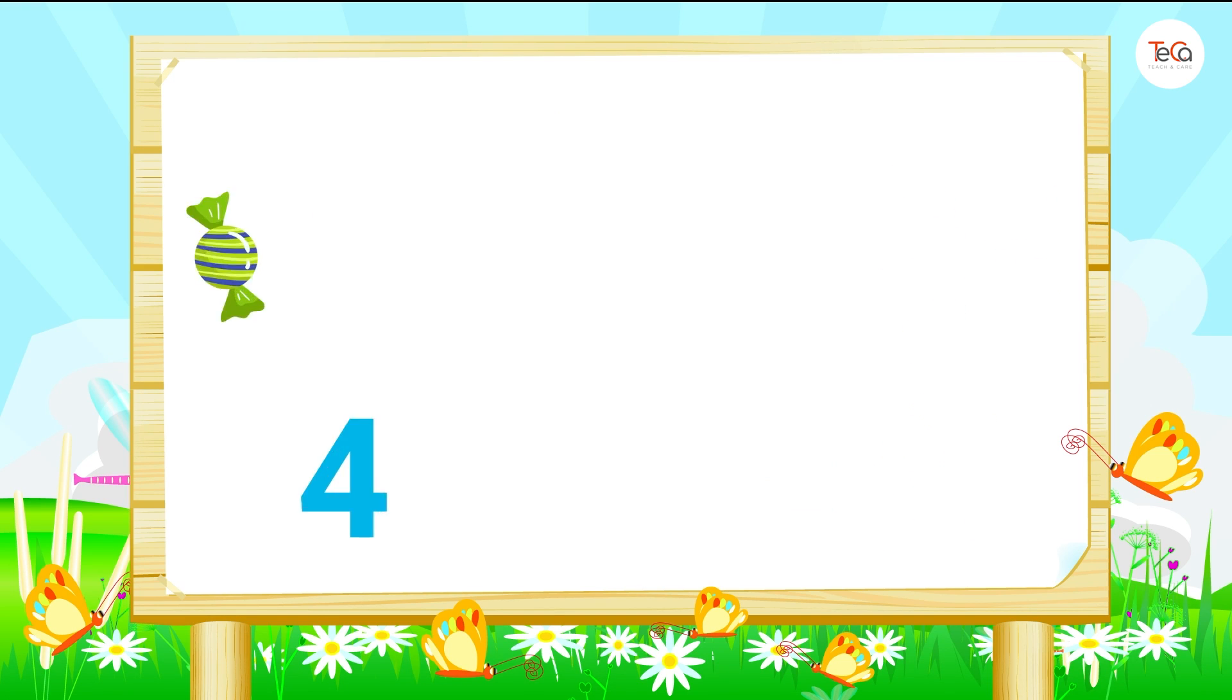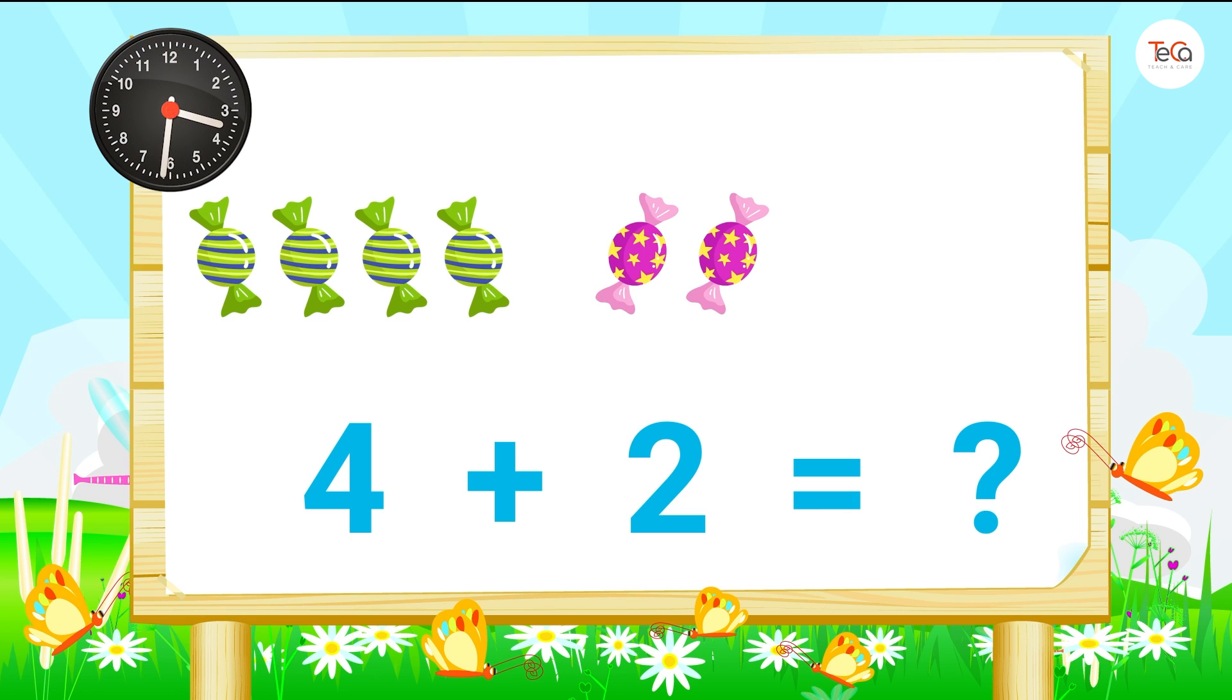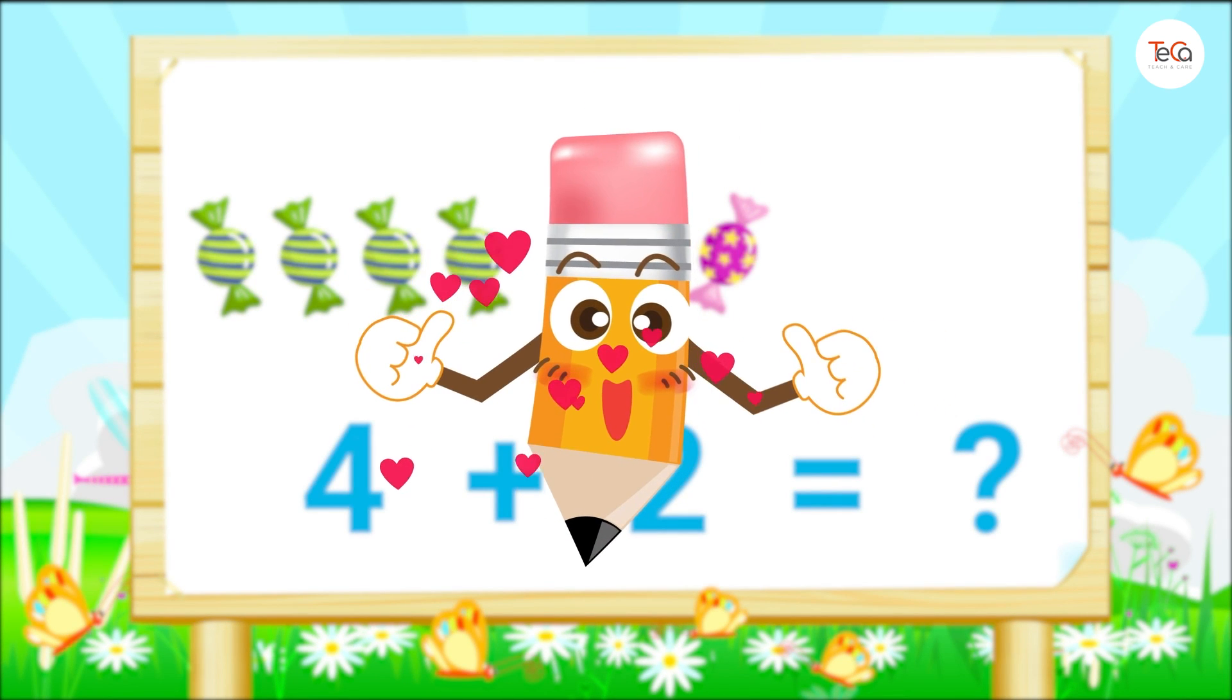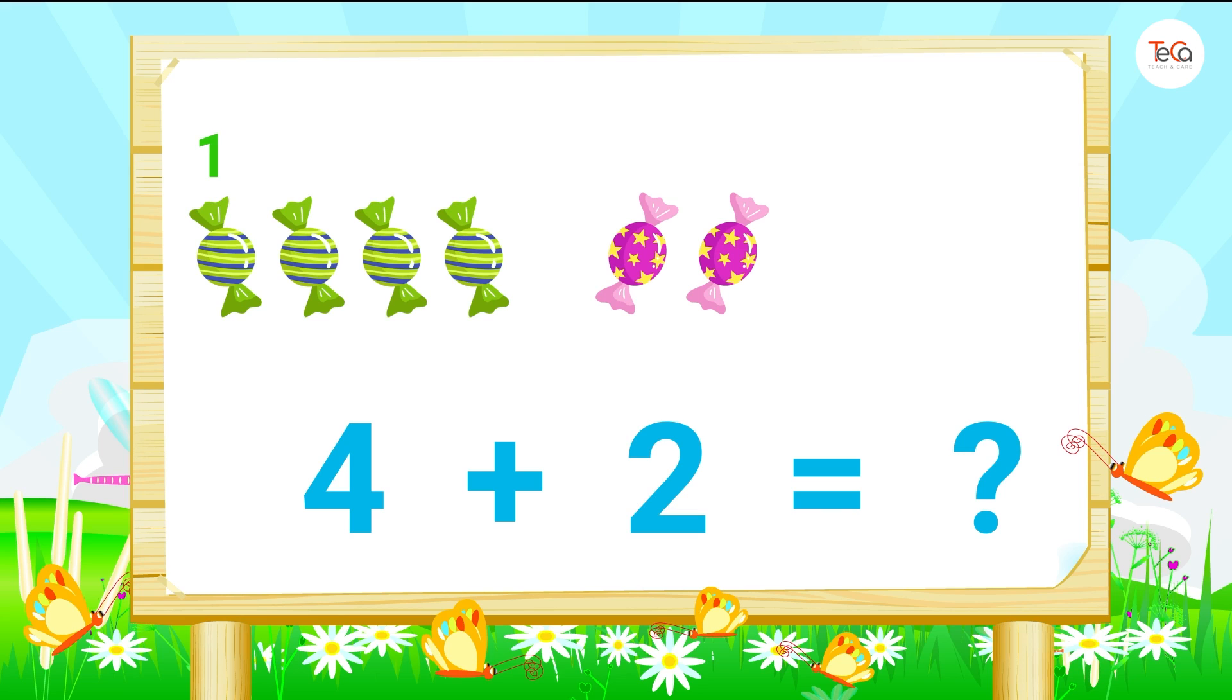Four candies plus two candies equals... Here we have one, two, three, four, five, six candies. So, four plus two equals six.